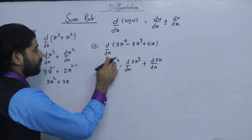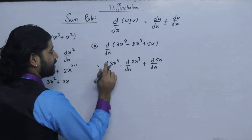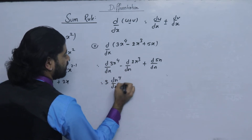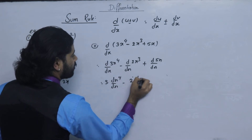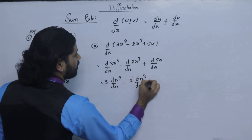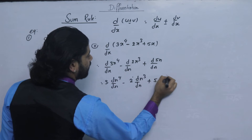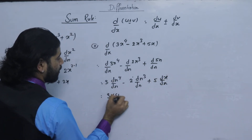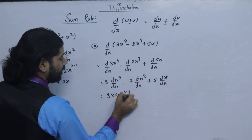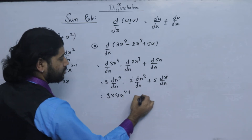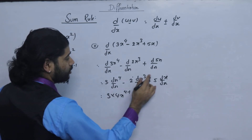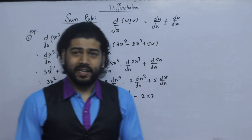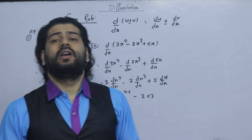x square minus x cross. x power 4 dx minus 2x over q dx plus 5 differentiation of x with respect to x, 3 into 4x over 4 minus 1, minus 2 into 3 power 1.